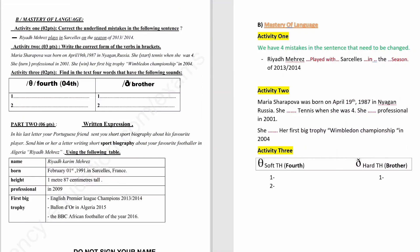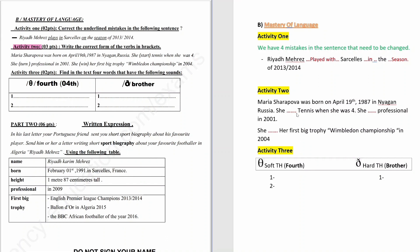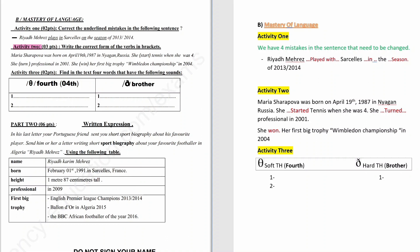Activity 2. Write the correct form of the verb in brackets. Maria Sharapova was born on April 19th, 1987 in Niger, Russia. She started tennis when she was four. She turned professional in 2001. She won her first big trophy, the Wimbledon Championship, in 2004.